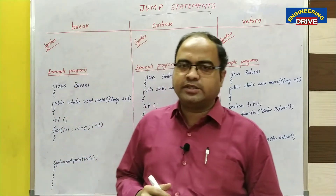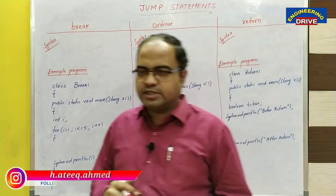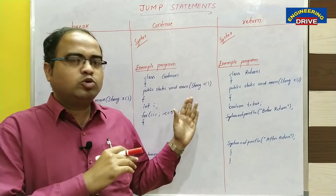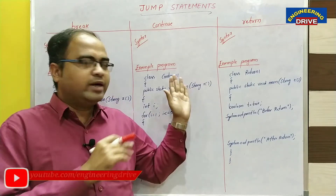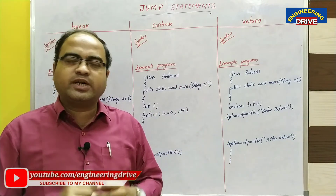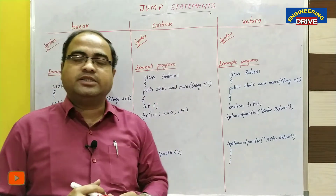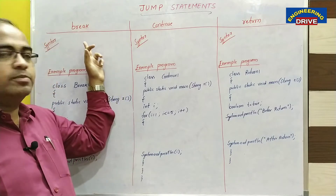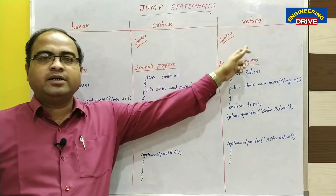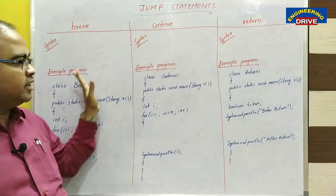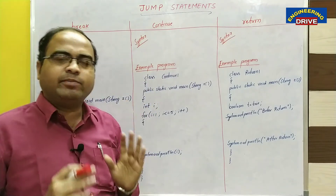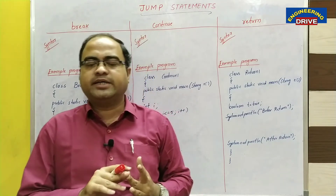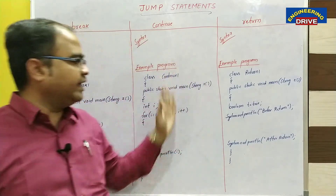The main purpose of using this jump statement is to alter the execution of our Java program. If we want to move the control from one position to another position in our Java program, then we can make use of jump statements. Java supports three types of jump statements: break, continue, and return. Today's session will clearly differentiate the working of break, continue, and return along with syntax and example programs.